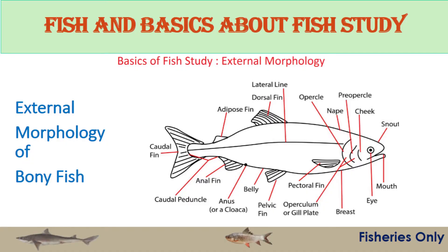The caudal peduncle is the posterior part of the body, and it consists of the peduncle supporting the caudal fin. On the dorsal side, there is the nape, which is the region of the head above and behind the eyes.